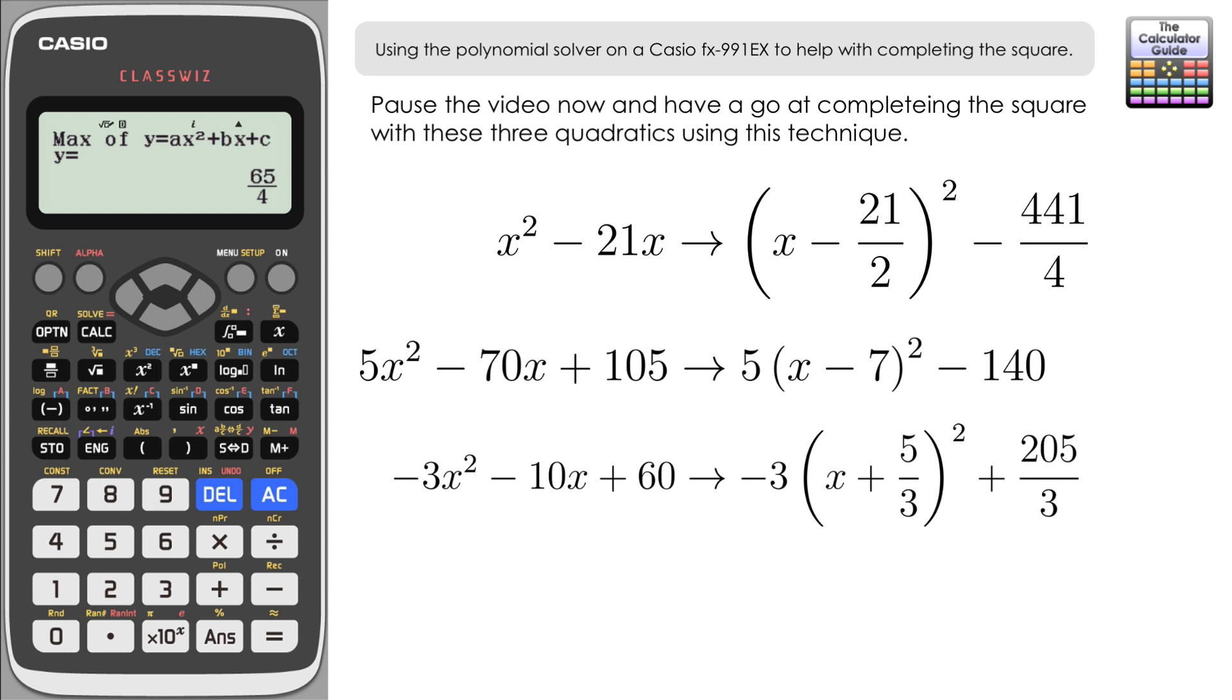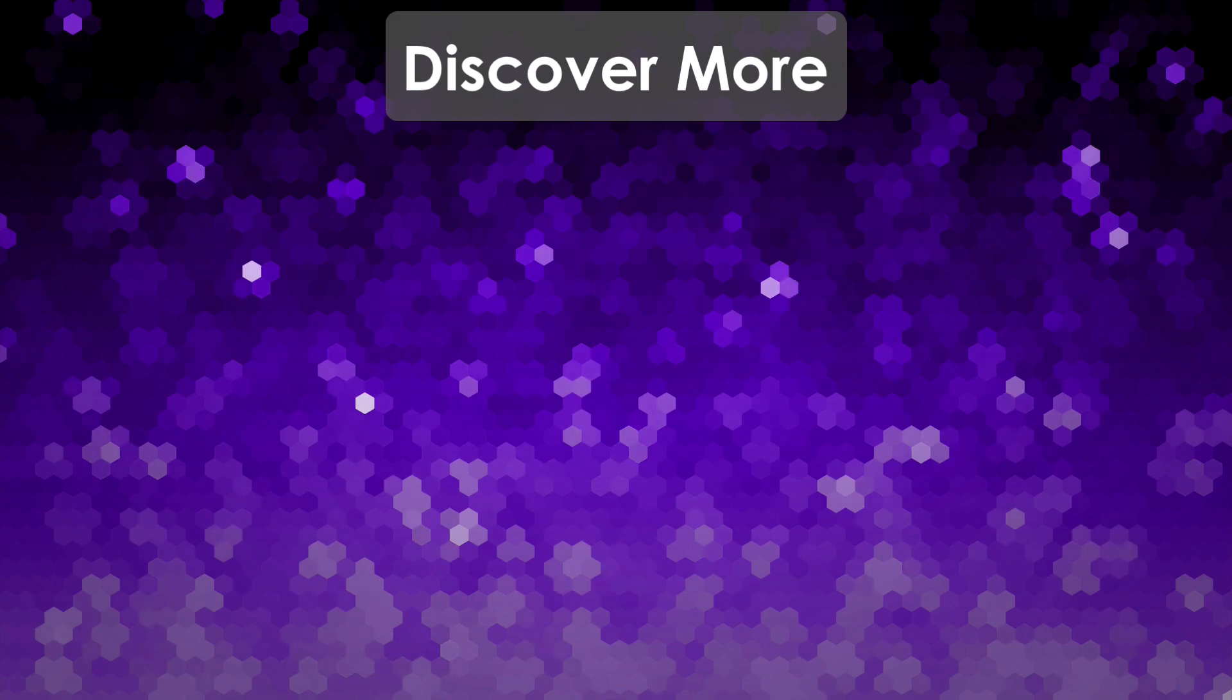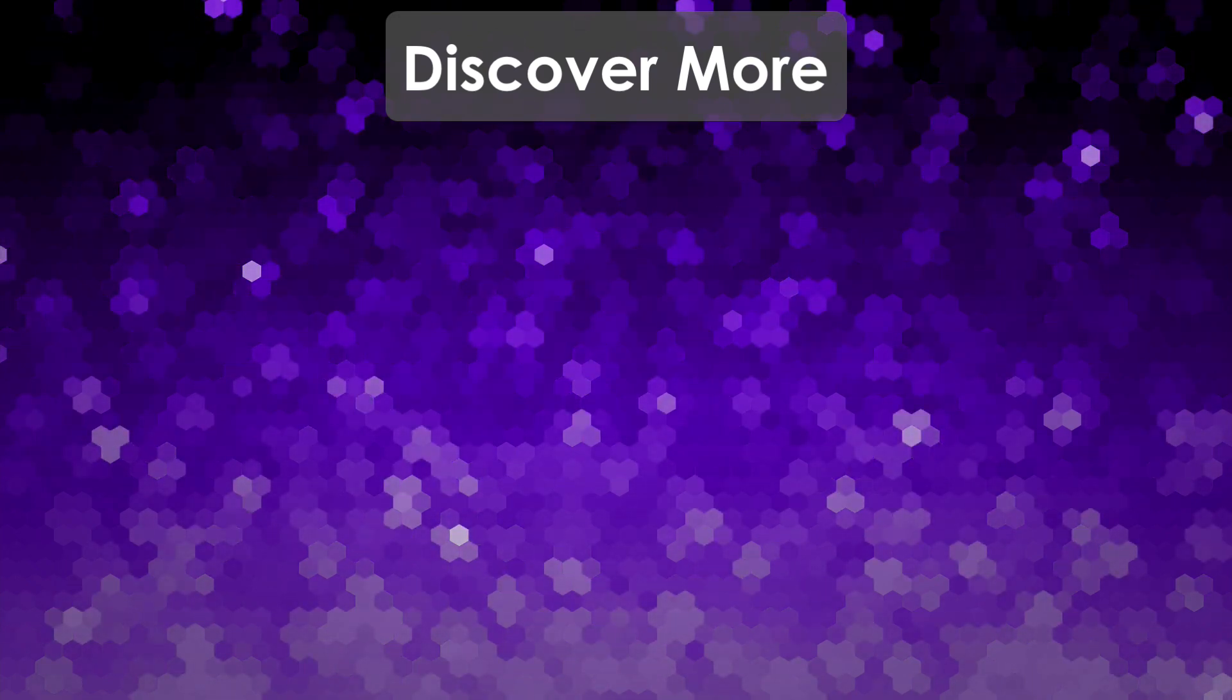So there you go. A method of using information from the polynomial solver to help us with completing the square. Let me know in the comments below if you think you're ever going to use this technique, if you think there's any examples where it may not work, or whether you think it's maybe good for verifying once you've done the full algebraic method. Don't forget to like and subscribe for future videos, but that's it for this video. Thank you very much for watching and I shall see you next time on the calculator guide.